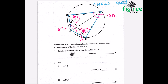In part A, they ask us to state the special name given to the cyclic quadrilateral. Drawing A, B, C, D — if adjacent sides are equal, it is a special type. Since they already stated it is a cyclic quadrilateral, we must give the special name. If we write cyclic quadrilateral here, it will be wrong. Since the adjacent sides are equal — AB equals AD, and BC equals DC — this is a kite.